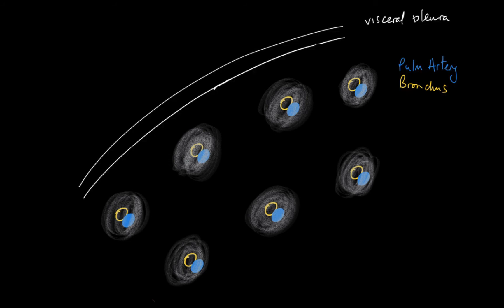If you then take away the grid — which is the septa — this is what a central lobular nodule would look like on an HRCT, so you don't ordinarily see the septa unless they are full of fluid or lymph.